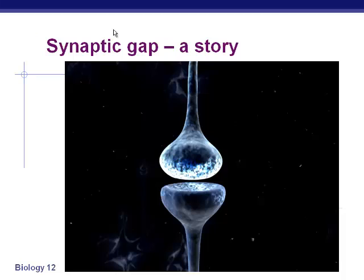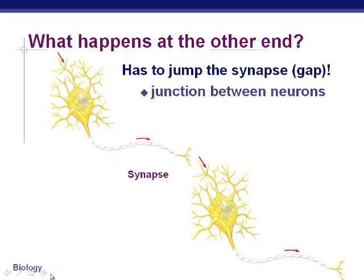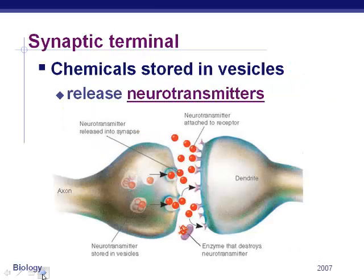Welcome back — this is the final part of our nervous system unit, all about the synaptic gap: how a message comes from the end of one axon and gets across to the dendrite of another neuron to send a signal. It has to jump across that synapse, which is the gap between two neurons. To bridge that gap, it uses neurotransmitters.